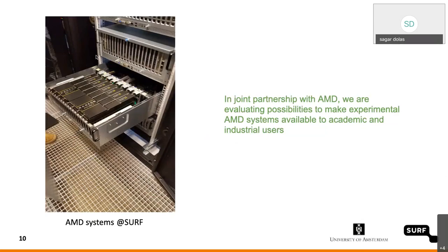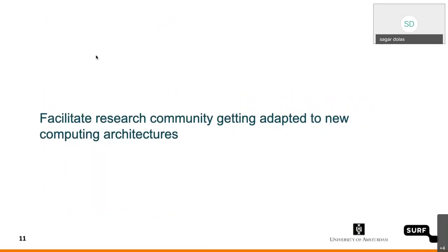My understanding is that the supercomputing landscape is changing fast and radically. Organizations like SURF can help facilitate or navigate that transition. The main focal point and purpose of this project is to encourage more and more community-wide involvement in using those architectures. The entire purpose of this project is to facilitate the research community getting adopted to new computing architectures. It might be AMD this time, but it could be something else in a couple of years — it's a cyclic progression.